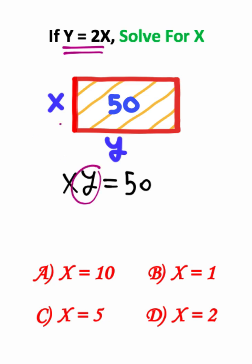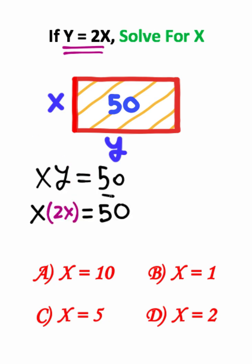So I can take y and replace it with 2x. This is what our equation ends up looking like. I can combine the x's here by multiplying them, which gives us 2x² = 50.